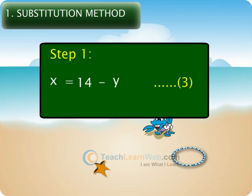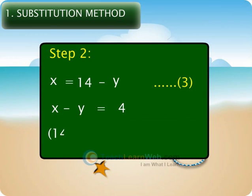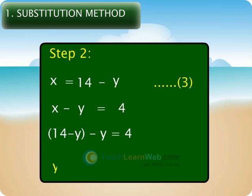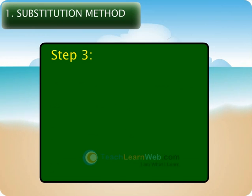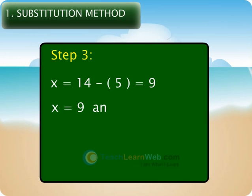Substitute the value of x in the second equation. That is, in x minus y equals 4, we get 14 minus y minus y is equal to 4, so y is equal to 5. Substituting this value of y in equation 3, we get x is equal to 14 minus 5 is equal to 9. Therefore, the solution is x equals 9 and y equals 5.